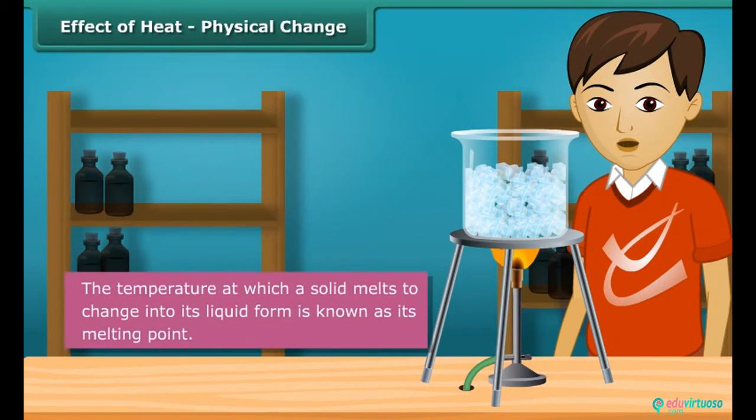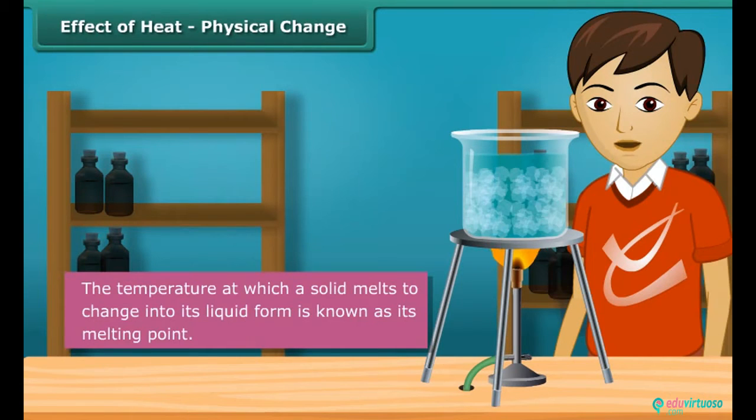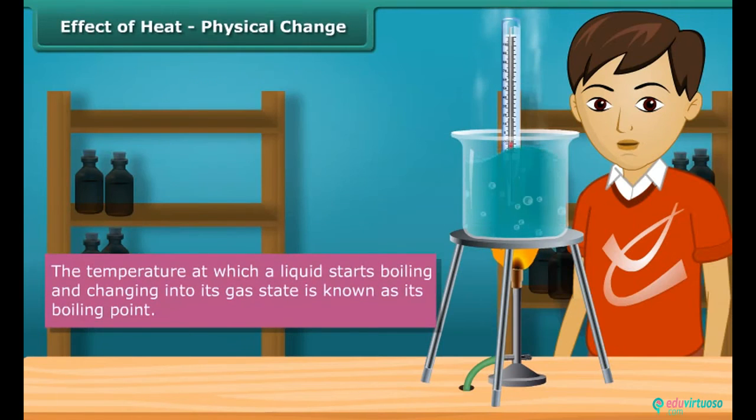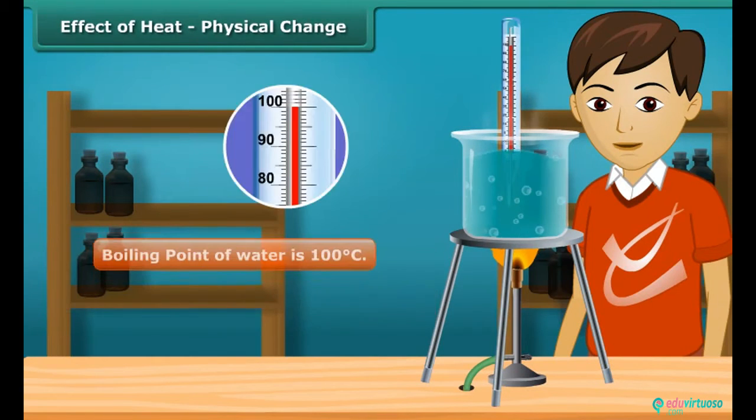The temperature at which a solid melts to change into its liquid form is known as its melting point. Melting point of ice is 0 degrees Celsius. The temperature at which a liquid starts boiling and changing into its gas state is known as its boiling point. Boiling point of water is 100 degrees Celsius.